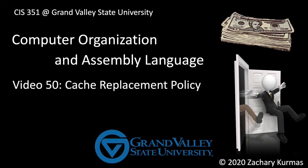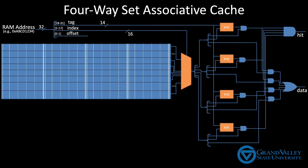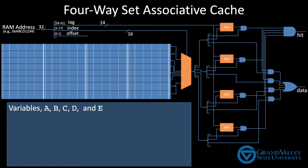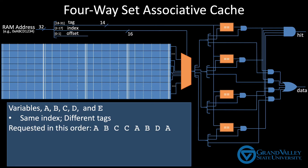Imagine we have a four-way set associative cache and we have five variables — A, B, C, D, and E — and each variable is placed in memory such that all five have the same index but different tags, which means they all compete for the same line in the cache. Suppose we're running some code that happens to request the variables in this order.